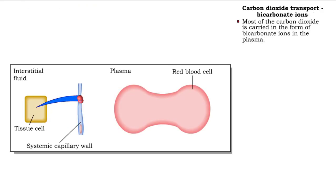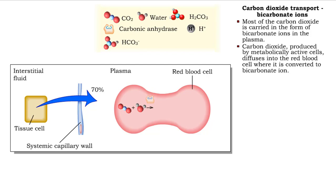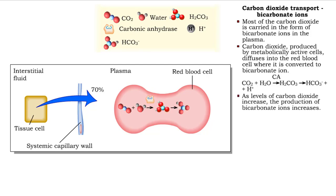Most of the carbon dioxide is carried in the form of bicarbonate ions in the plasma. The carbon dioxide in the plasma diffuses into the red blood cell, where it undergoes a chemical reaction catalyzed by the enzyme carbonic anhydrase and is rapidly converted to bicarbonate ions. As levels of carbon dioxide increase, the production of bicarbonate ions increases.